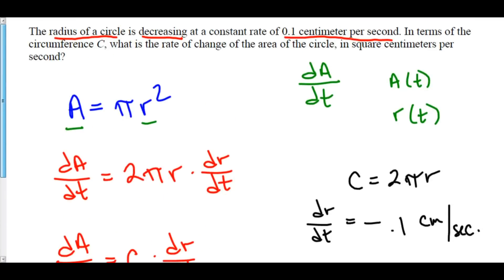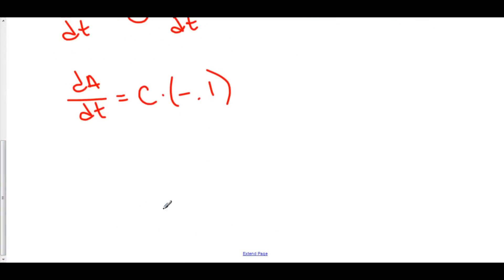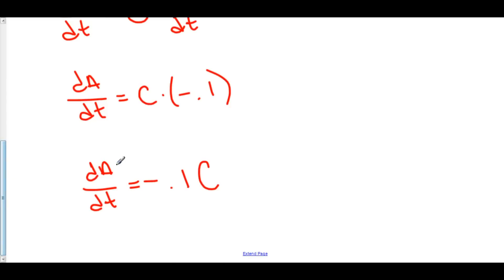In terms of the circumference C, the rate of change of the area of the circle is −0.1C. For the units: A is in terms of centimeters squared, and t is in terms of seconds, so the final answer is −0.1C centimeters squared per second.